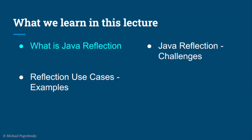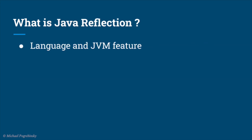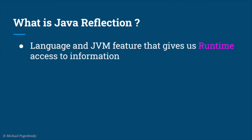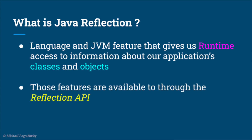So what is Java Reflection? Java Reflection is a powerful language and JVM feature that gives us runtime access to information about our application's classes and objects. Those features are available to us through the Reflection API, which is a set of classes and methods that come with every JDK.